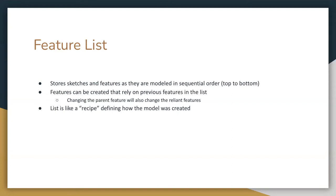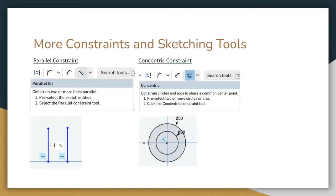Features are things that use sketches to create different parts. Features rely on previous features in the list. For example, if you created a sketch of a square and made that a cube, the next Feature Tool will make that cube into something else, maybe like dice or a different shape. Today we're going to learn some more sketching tools as well as some other techniques.